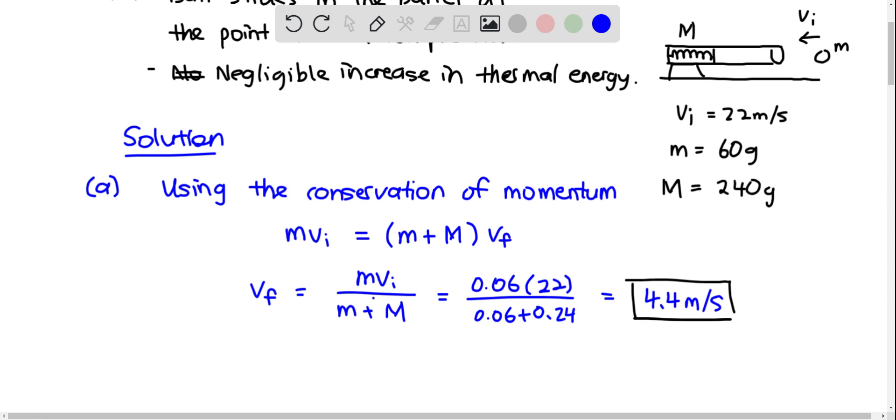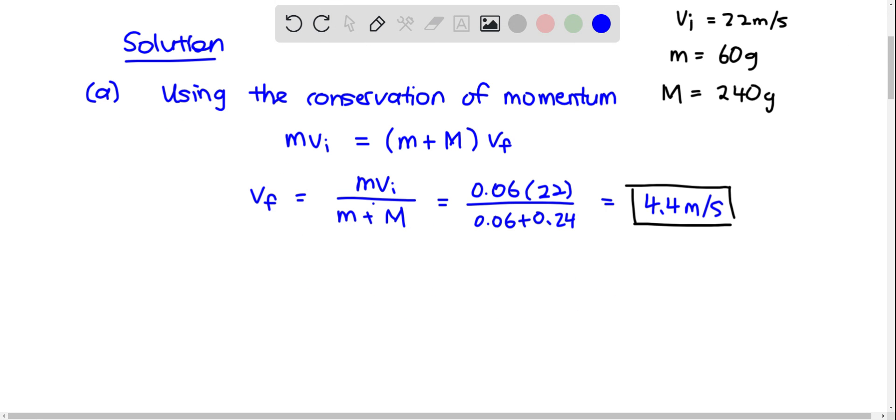Next, in part B, we want to find the fraction of initial kinetic energy stored in the spring. So first we can calculate the change in kinetic energy.